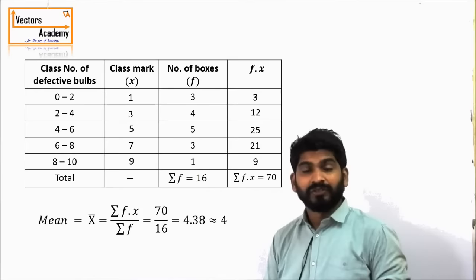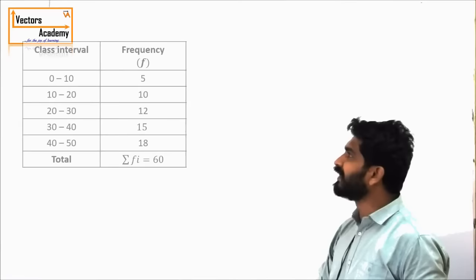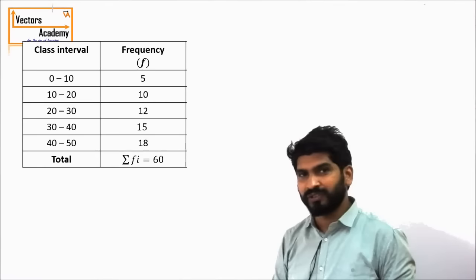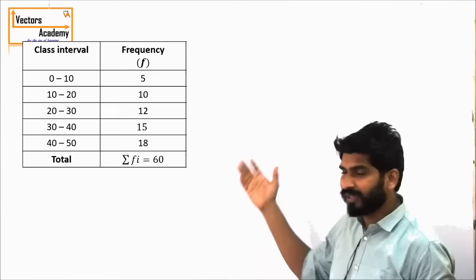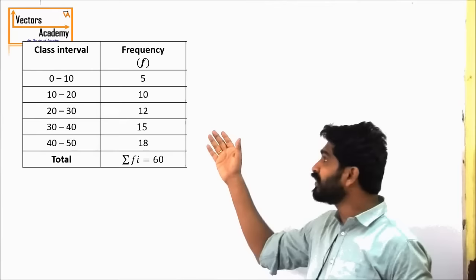This is how we calculate the mean. Now let us have a quick example of how we calculate the median. Median is the centermost value of the observation. Here we have 60 students who have scored in this pattern — there are 5 students who scored from 0 to 10, and 10 students who scored from 10 to 20, and so on.